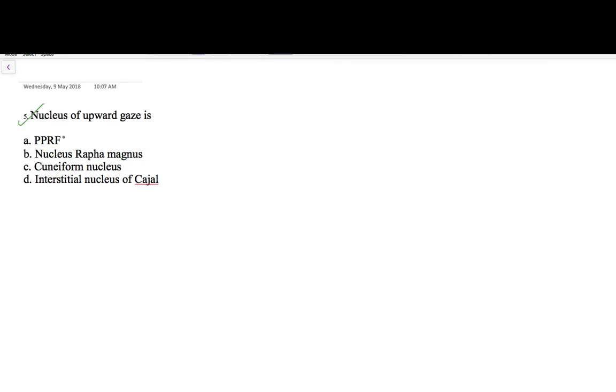So our next question was: nucleus of upward gaze is? Your options were PPRF, nucleus raphe magnus, cuneiform nucleus, and interstitial nucleus of Cajal. The answer here would be interstitial nucleus of Cajal. Now you should remember what are the nuclei involved in upward gaze.